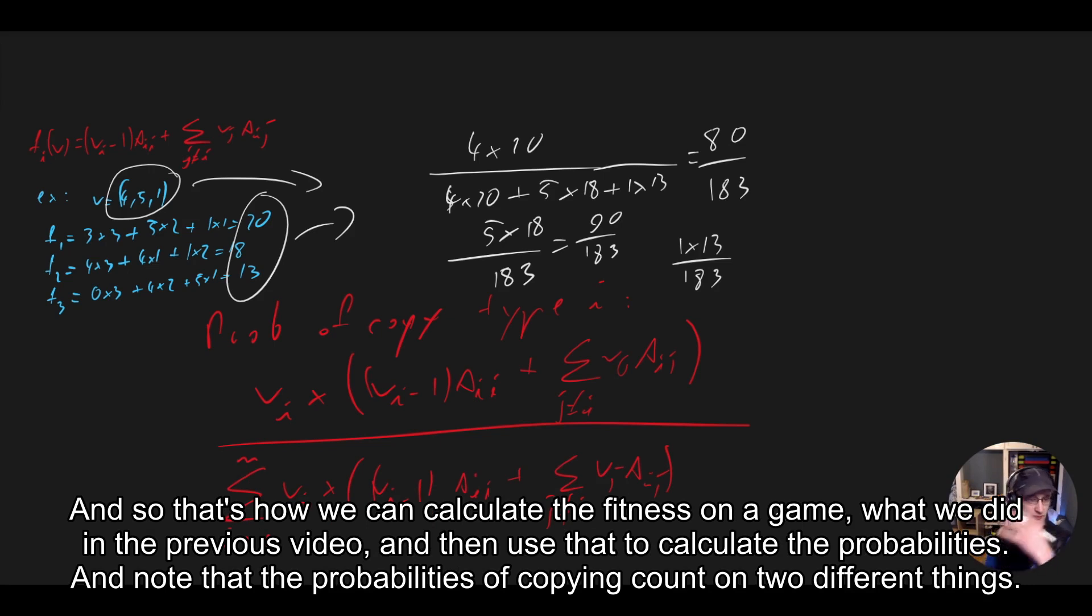And so that's how we can calculate the fitness on the game, which is what we did in the previous video, and then use that to calculate the probabilities. And note that the probabilities of copying depend on two different things.